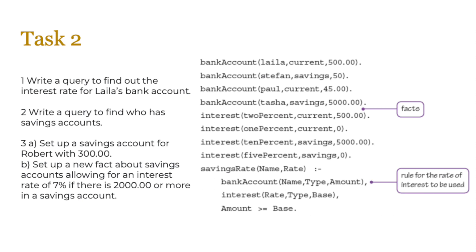On to task two. It's your turn to write a query to find out the interest rate for Layla's bank account. You also need to write a query to find out who has savings accounts. For the third task, you need to set up a savings account for Robert with 300 — this is a new fact. You then need to set up another fact about savings accounts allowing for an interest rate of 7% if there's 2000 or more in a savings account, so we need a bank_account fact and an interest fact. Do pause the video and have a go.